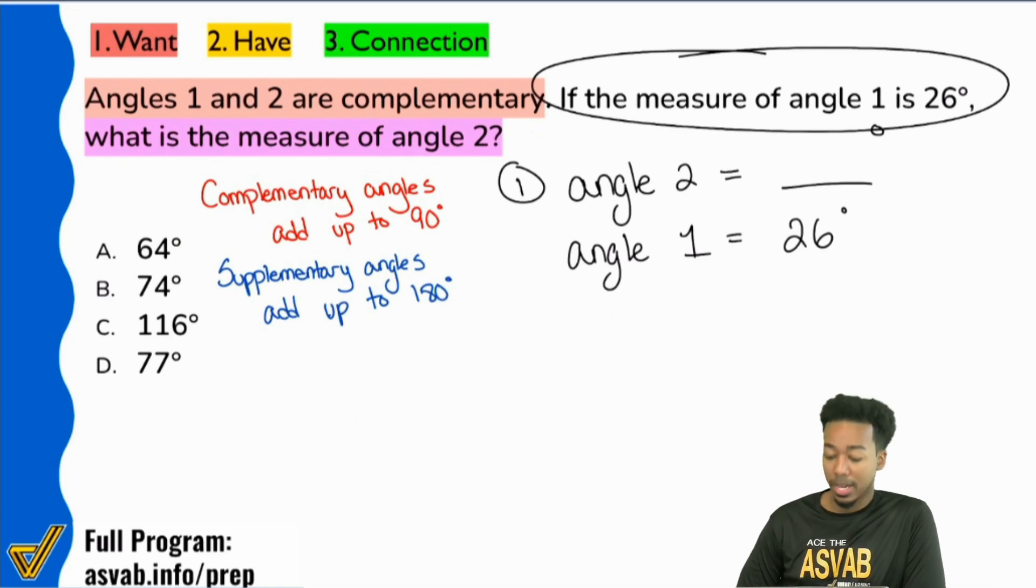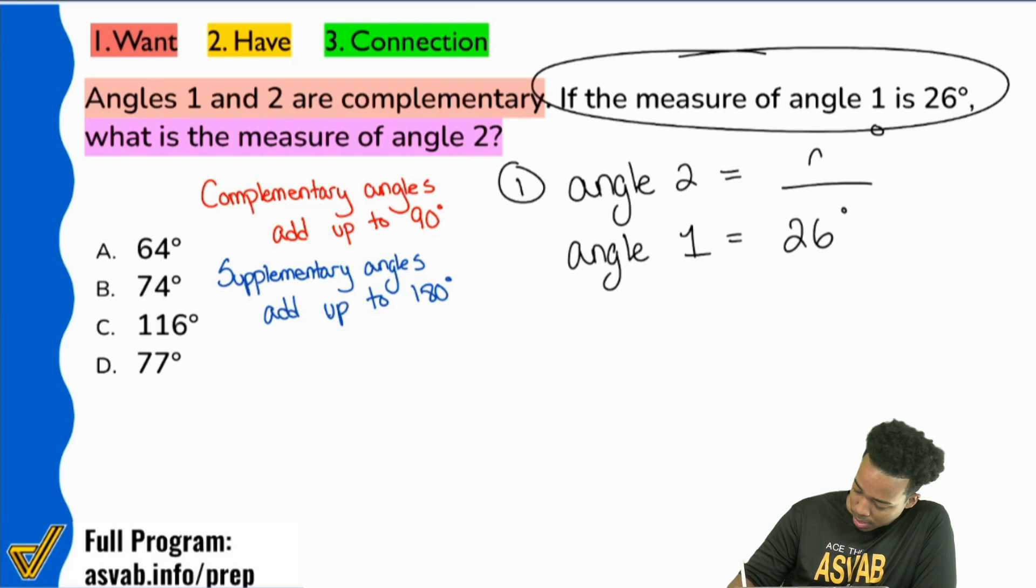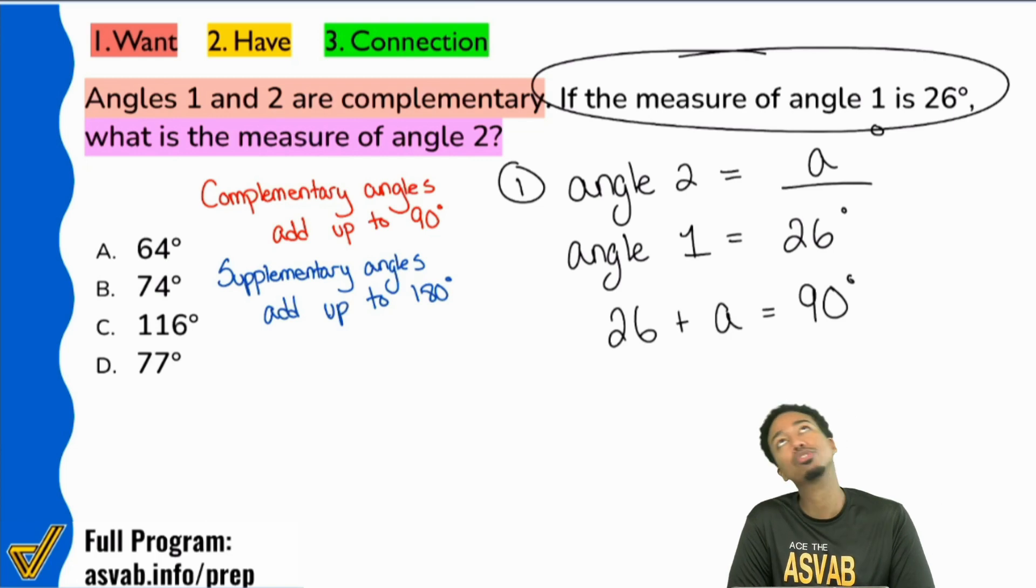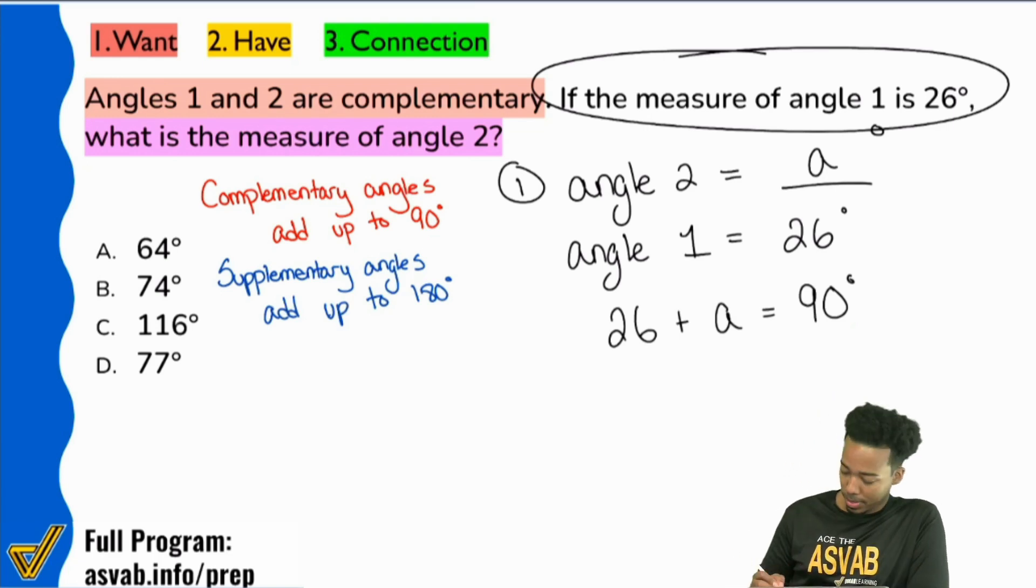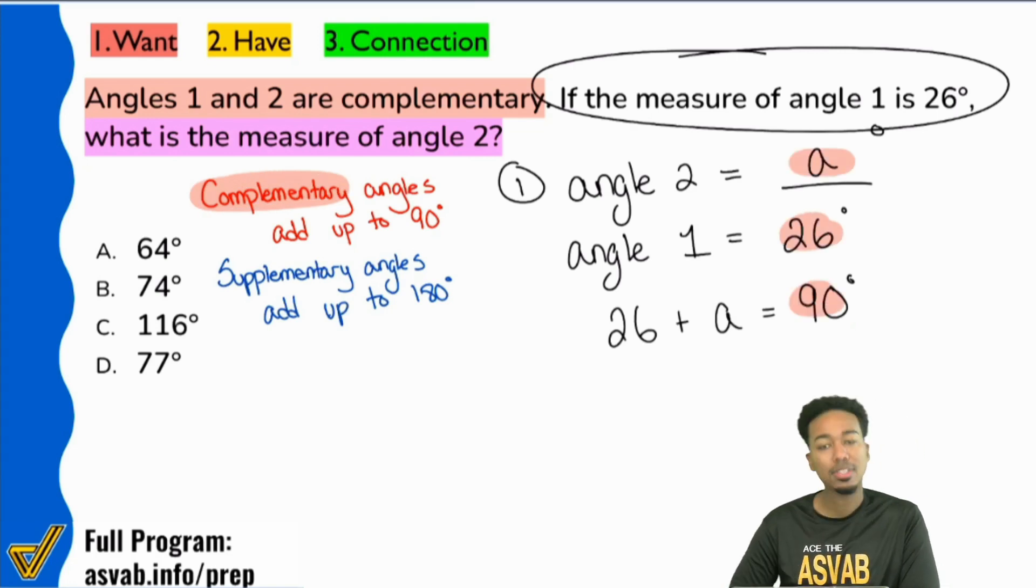So now that you know that, you know that angle two, so I'll just say A for angle. We know that 26 degrees for angle one plus the degrees for angle two, that's going to be 90 degrees. Everybody, is that a true statement right over here? Is that a true statement? Yep. Because again, it says that they're complementary. It says specifically that they are complementary. So these two have to add up to 90.